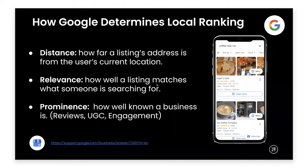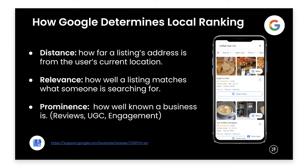Now let's talk about how Google determines local ranking. According to a Google support article, there are three main factors: distance, relevance, and prominence. For distance, if you search 'coffee near me' while standing in Manhattan, a business in Chicago would never show up — the distance is too far. Having an accurate address and accurate geotag is very important for near-me searches. For relevance, if I search for coffee, I don't want to see a hardware store. Google primarily uses the primary category — like 'coffee shop' — to determine relevance.